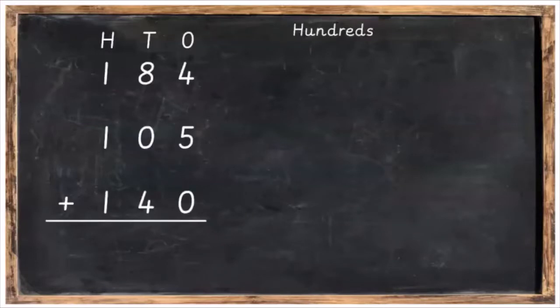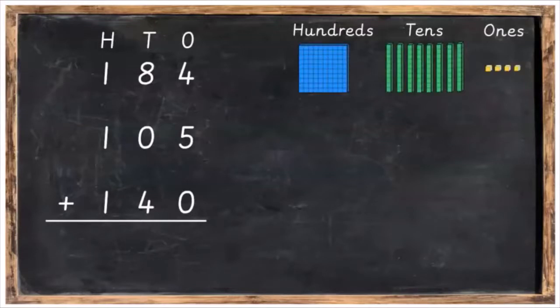We're going to take our sum and make it using Dean's blocks. We're going to have our hundreds, tens and ones. We're going to have 100, eight tens and four ones for 184. Then we're going to have 100, no tens in the middle, and five ones for 105.